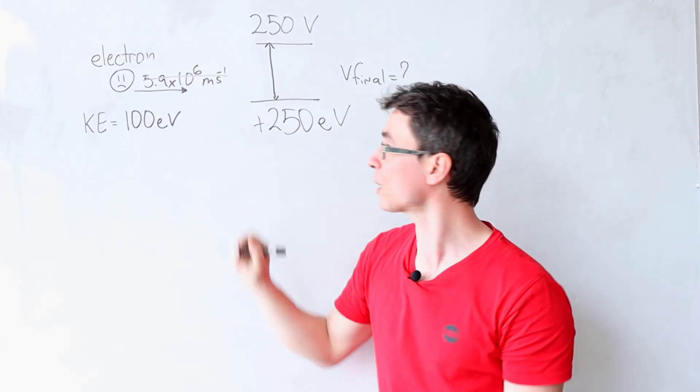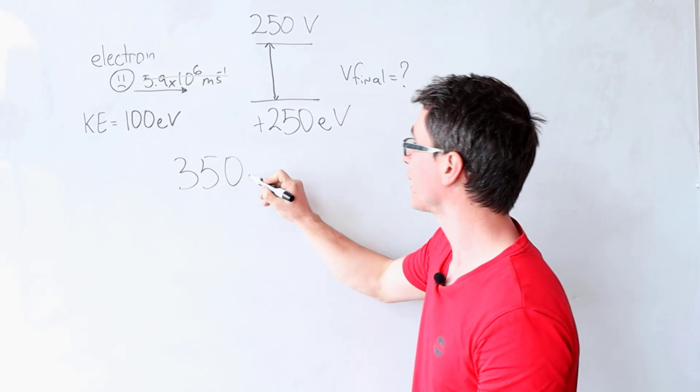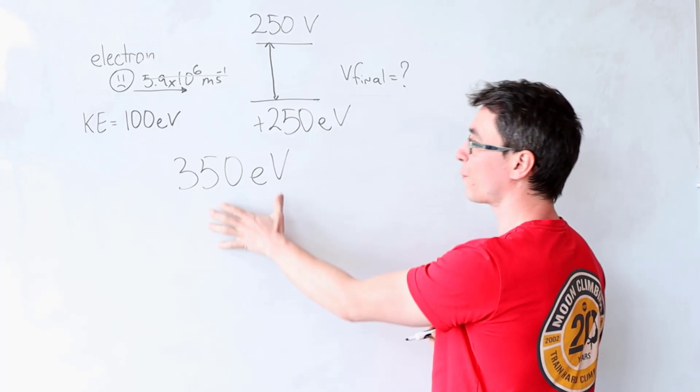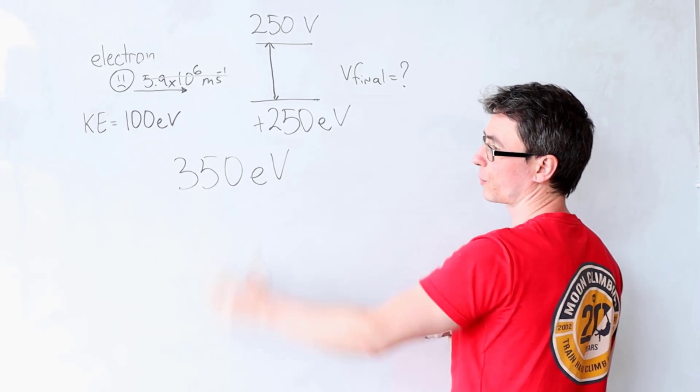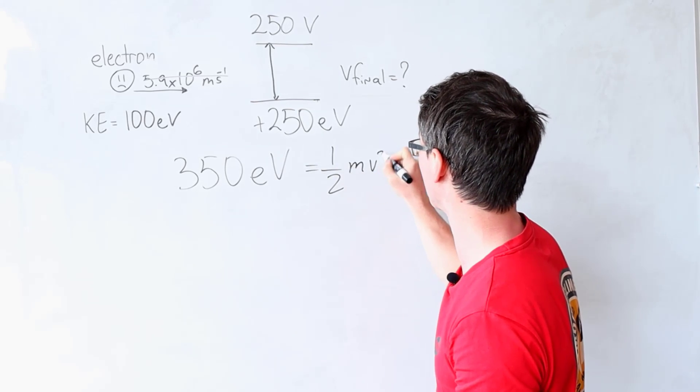It already had 100, so this means that the final kinetic energy of this electron will be given by 350 electron volts, and we can directly set that equal to a half mv squared.